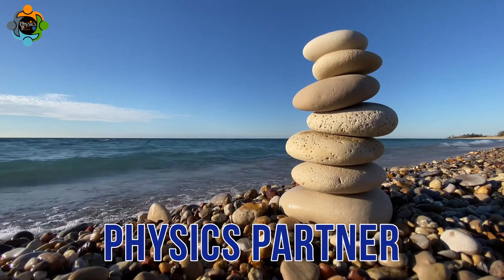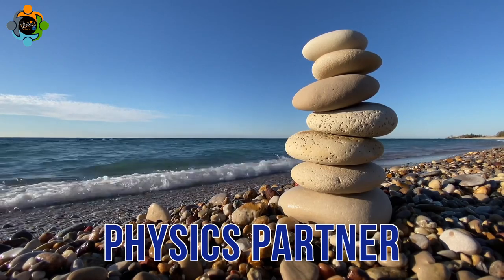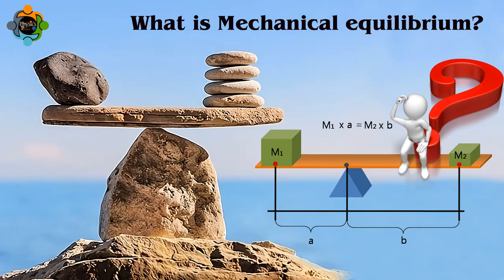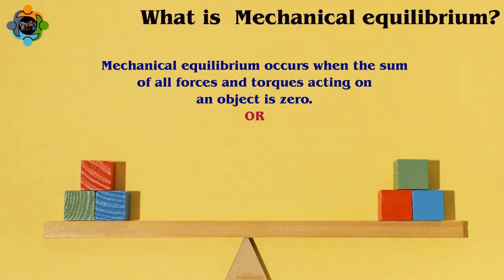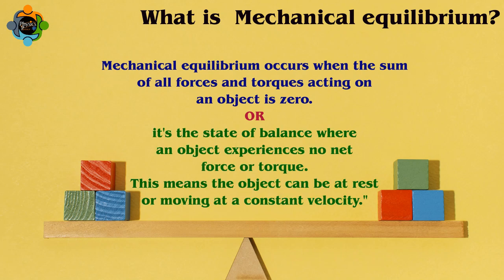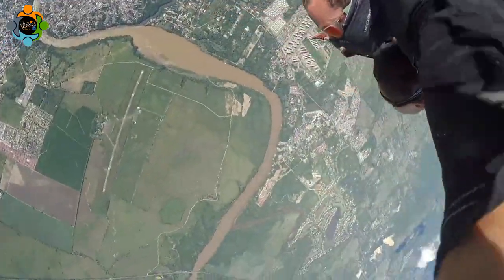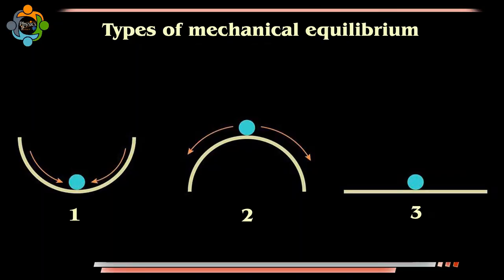Hello and welcome back to another episode of Physics Partner. Today we are diving into the fascinating world of mechanical equilibrium. Mechanical equilibrium occurs when the sum of all forces and torques acting on an object is zero. In simpler terms, it's the state of balance where an object experiences no net force or torque. This means the object can be at rest or moving at a constant velocity.